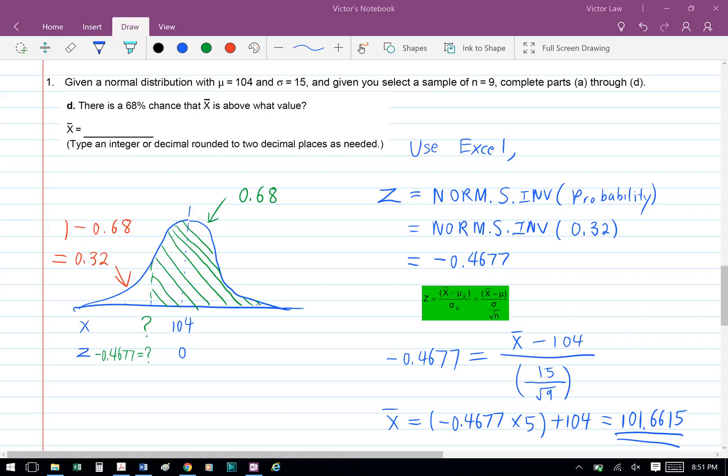Therefore, x bar equals negative 0.4677 times 5 plus 104, which gives us 101.6615. That's the answer for Part D.